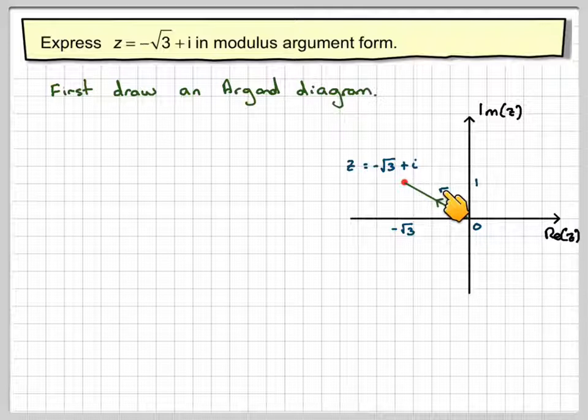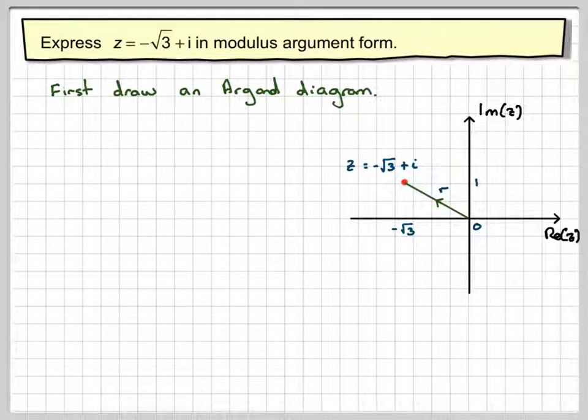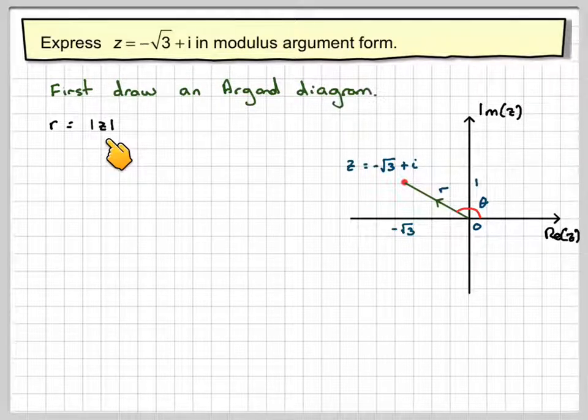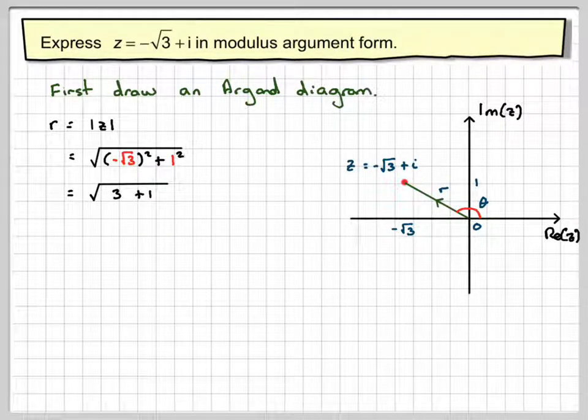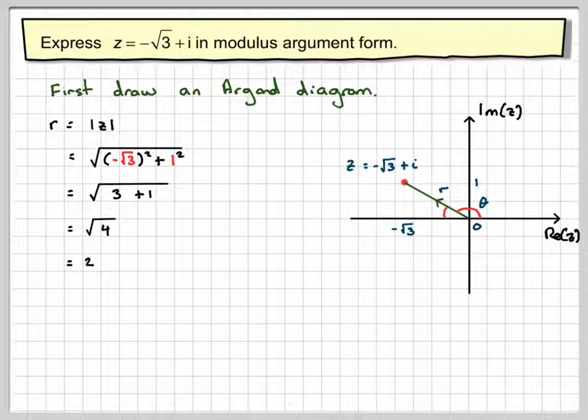We need to find r, which is the length of that line there, so we use Pythagoras for that. So r is the modulus of z, so it's going to be the square root of minus 3 squared plus 1 squared. If you square root some of the square root, you get back to what you started with, so it's 3 plus 1, which gives me root 4, which is 2. So the length of that line is 2.